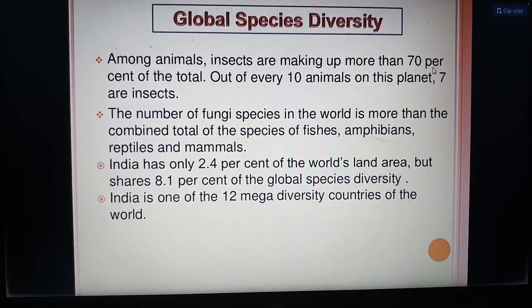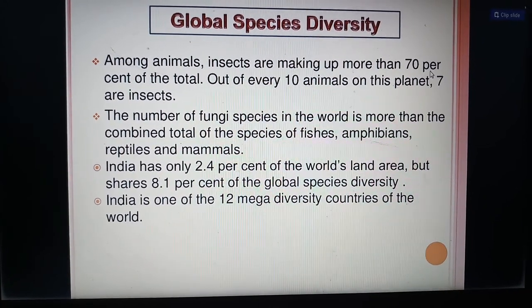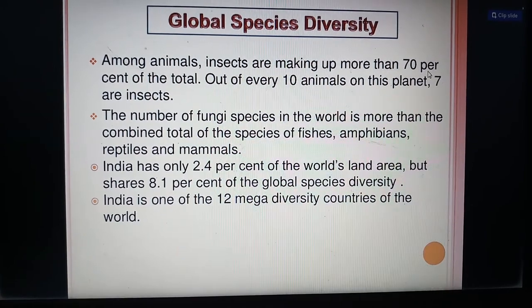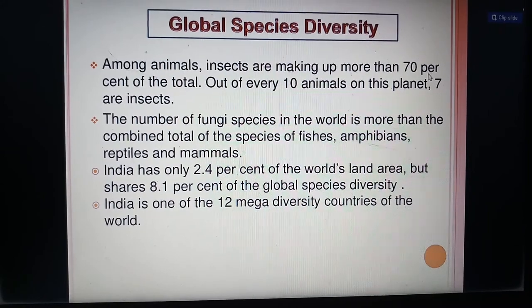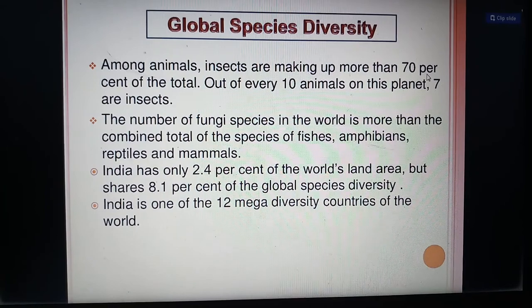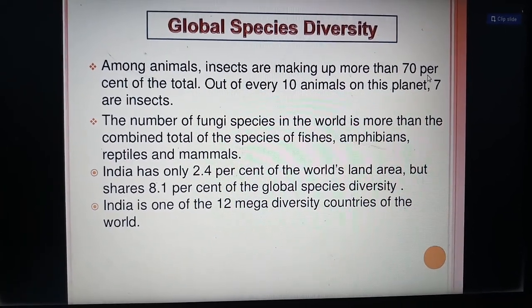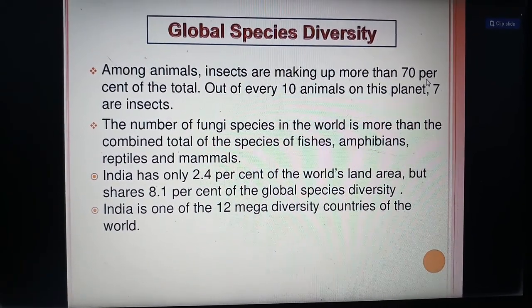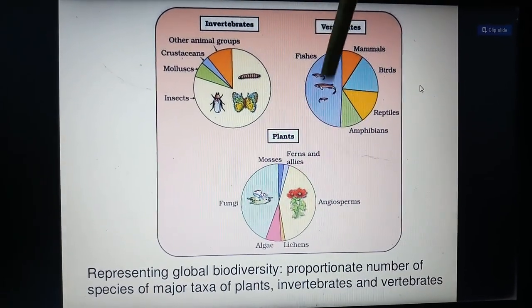Among animals, insects make up more than 70% of the total — out of every 10 animals on this planet, 7 are insects. The number of fungi species in the world is more than the combined total of fishes, amphibians, reptiles, and mammals. India has only 2.4% of the world's land area but shares around 8.1% of global species diversity, making it one of the 12 mega-diversity countries of the world. In this picture, we can see pie charts of invertebrates, vertebrates, and plants.